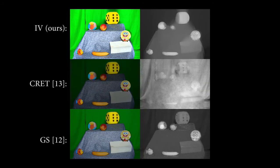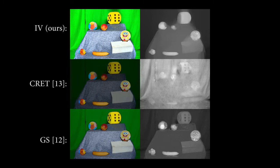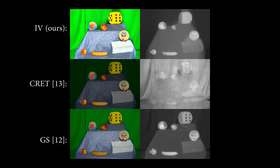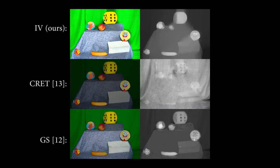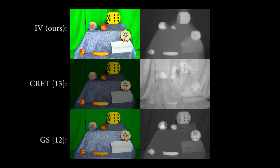The shading from CRET almost completely misses the shape of the scene, and the albedo from GS is inconsistent between frames. Our albedo is very consistent in time, and our shading well captures the overall shape of the scene.